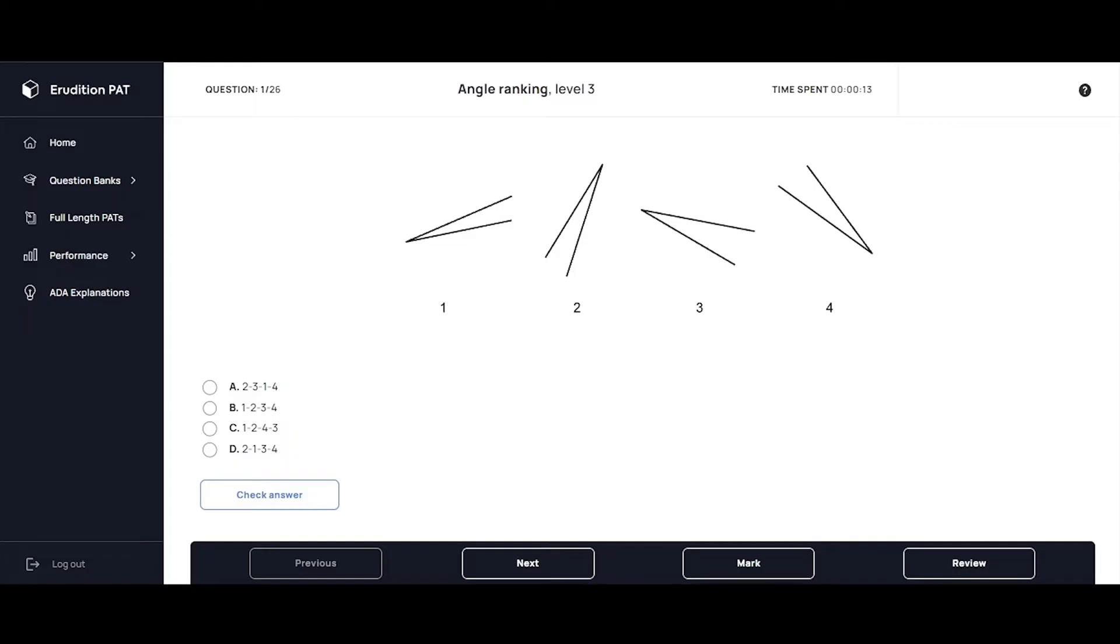For the angle ranking problems you're really going to want to take advantage of the DAT's cross out function. This feature is helpful for all the different kinds of problems but it's especially important for the angle ranking problems because all the answers are really specific and fully written out for you. So since you're going to be referring back to them over and over again it's incredibly helpful to cross out the ones that are no longer in the running. This process of elimination is one of the most important tools for angle ranking problems.